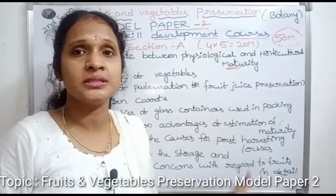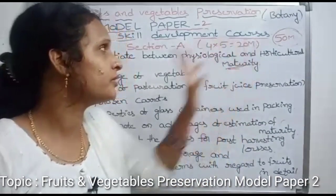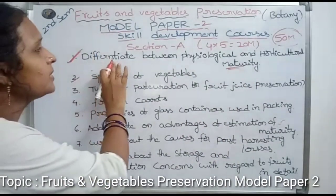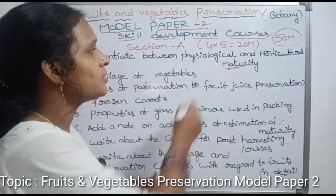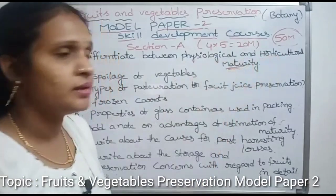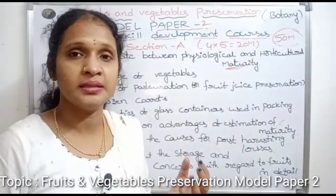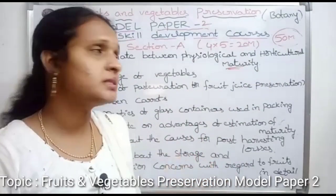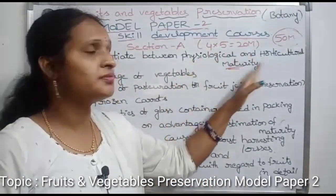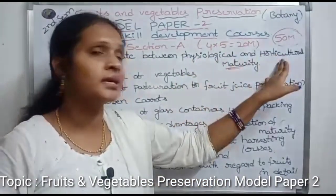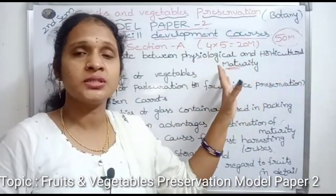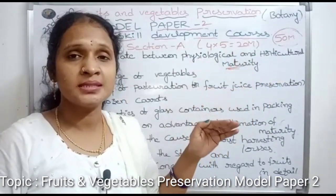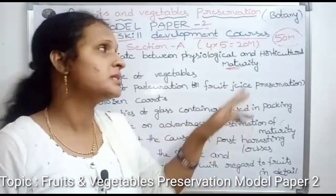First question: differentiate between physiological and horticultural maturity. Maturity means plant development, and the last development stage is the maturity stage. We need to understand the difference between physiological and horticultural maturity, and their respective development stages, including differences in skin characteristics.